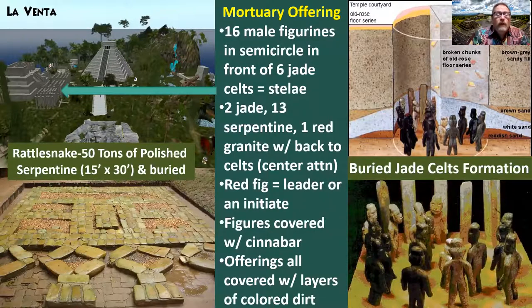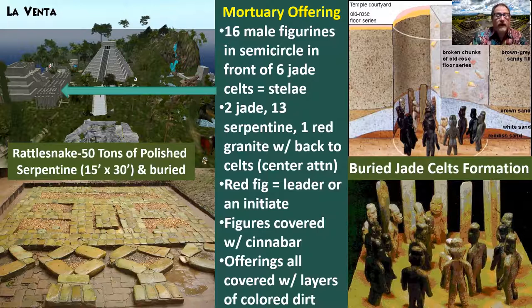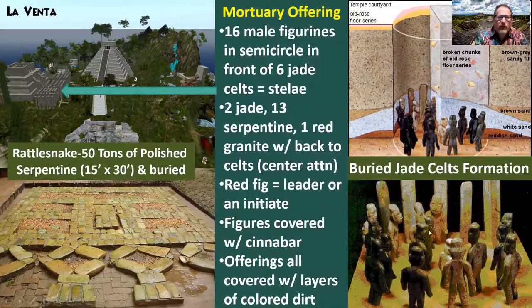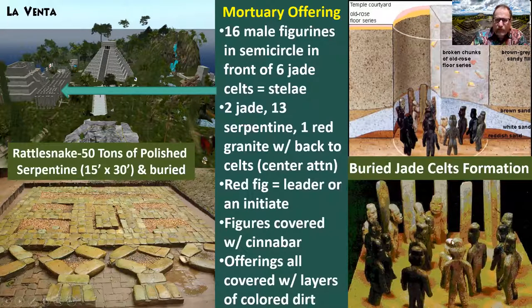A remarkable grave was found — a huge rattlesnake face, the beginning of the Mayan god Quetzalcoatl or the feathered rattlesnake. It's 50 tons of polished serpentine stone, 15 by 30 feet, and was buried as an homage to whoever was buried within it. Right next to it were found 16 male figures in a semicircle in front of six jade celts or stelae, all laid out with cinnabar — a lovely red offering — possibly offerings to the dead. We're still trying to interpret this formation.